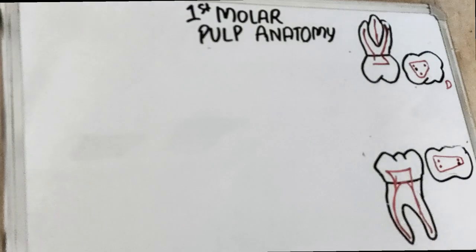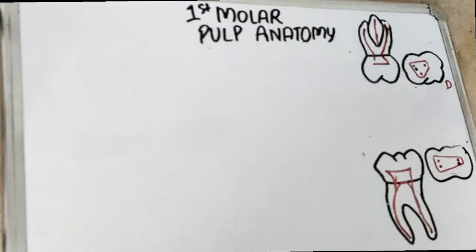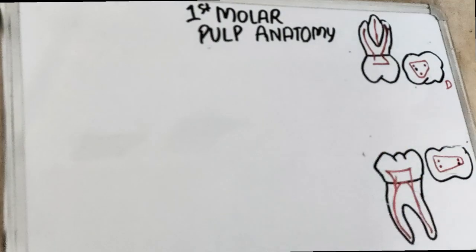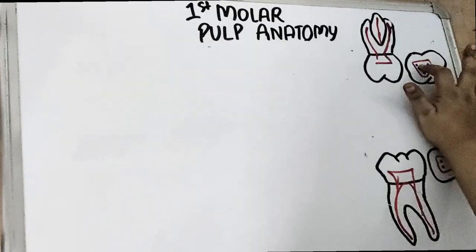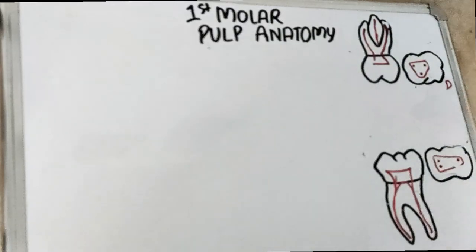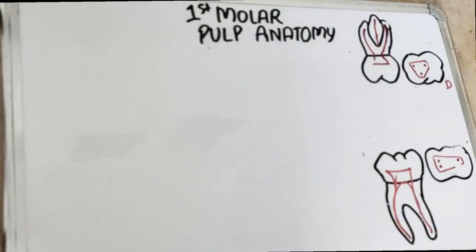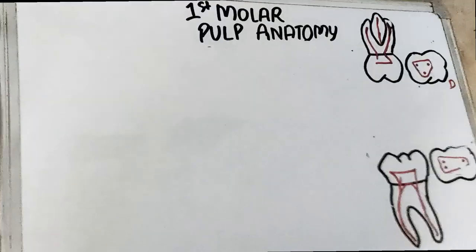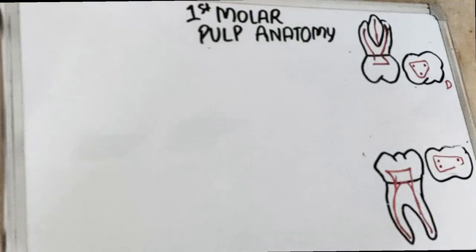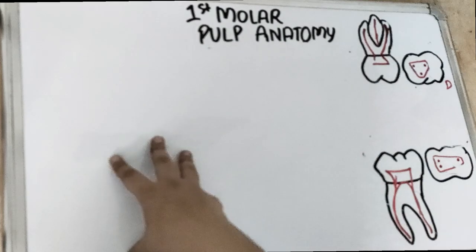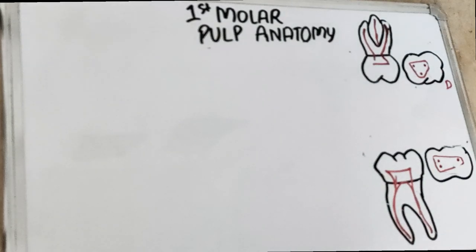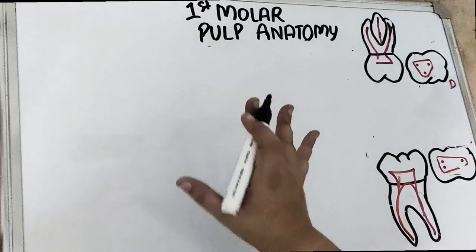Before we get started, make sure you subscribe to our channel and click on the bell icon so that you don't miss any of our exciting videos. Today's topic is an important question asked for viva and for NEET. We are going to understand and learn the anatomy of the pulp cavity for the maxillary first molar and the mandibular first molar.